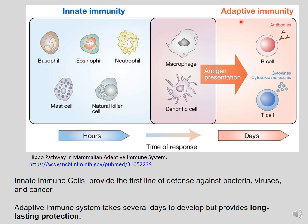Cells that participate in the innate immune response include basophils, eosinophils, neutrophils, mast cells, and natural killer cells. These cells are the first line of defense against bacteria, viruses, and even cancer. The main purpose of the innate immune response is to immediately — within hours — respond to infection and to prevent the spread and movement of foreign pathogens throughout the body.